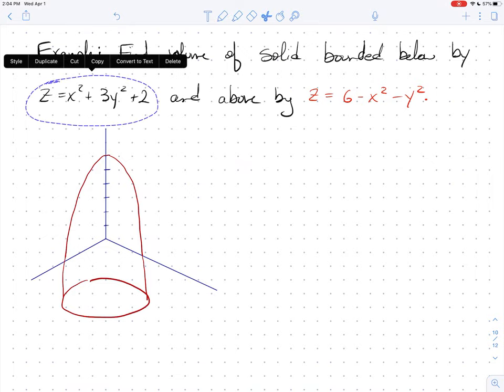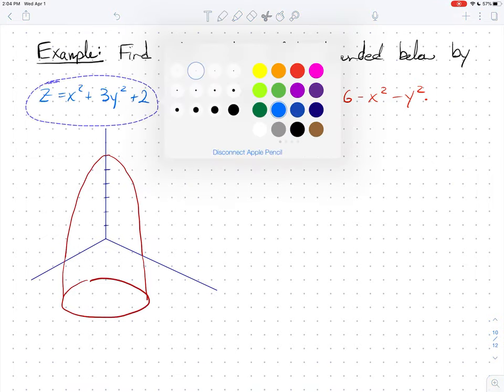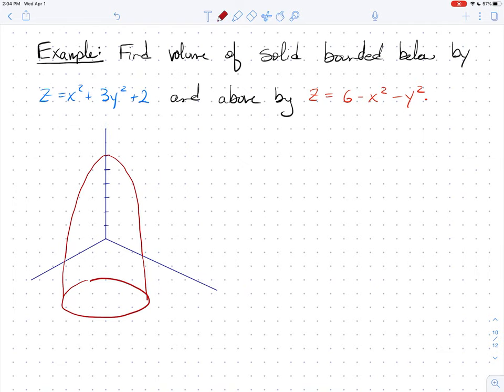And then this one let's make blue. It's going to be opening up because it's positive, and it's shifted up two. Also, by the way, it's elliptical. This isn't quite a circular paraboloid, but that's okay. I'm not going to try to draw that precise. I'm just going to go up two and I know that it's a paraboloid opening up.